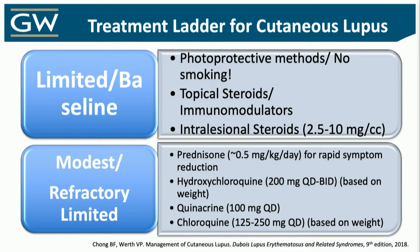For all cutaneous lupus patients, you're not skipping photoprotection. Smoking is a no-no — it increases the risk of squamous cell carcinoma in these patients and can also interfere with the first-line therapy, which is hydroxychloroquine. You're going to hit them hard with class 1 topical steroids and intralesional steroids to the thick plaques. On the scalp or in hair-bearing areas, I tend to go higher because I'm trying to prevent the loss of that follicular ostium.